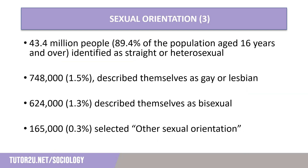Breaking this down into numbers: 43.4 million people in England and Wales identified as straight or heterosexual, 748,000 as gay or lesbian, 624,000 as bisexual, and 165,000 identified through the category other sexual orientation.